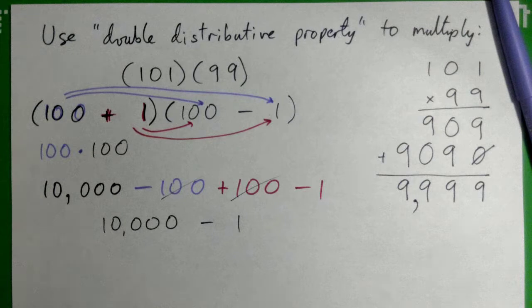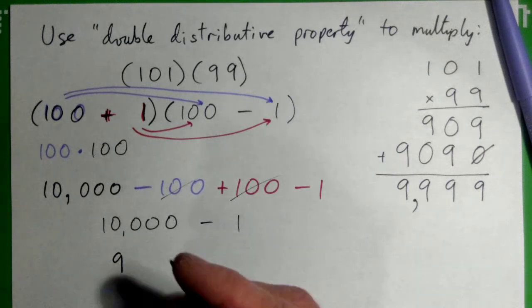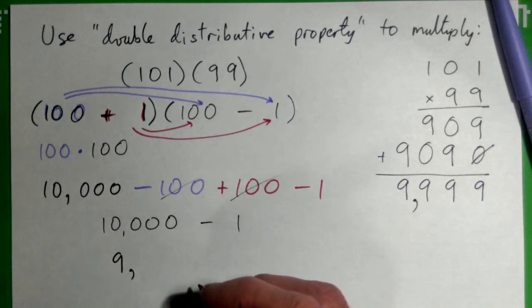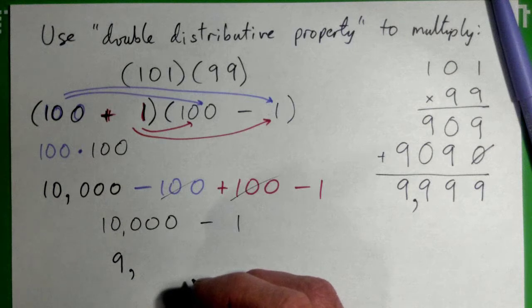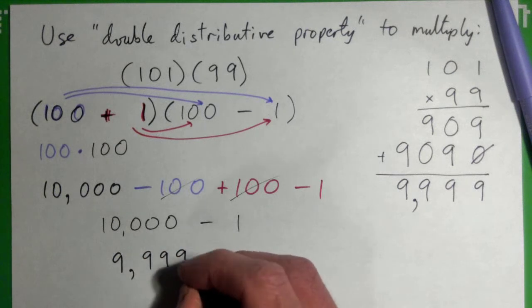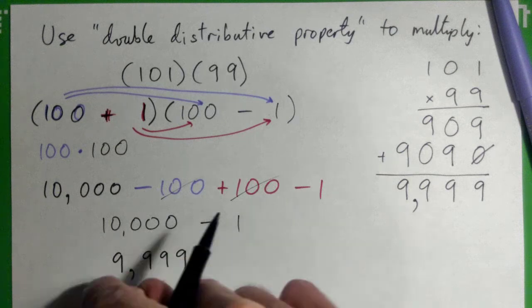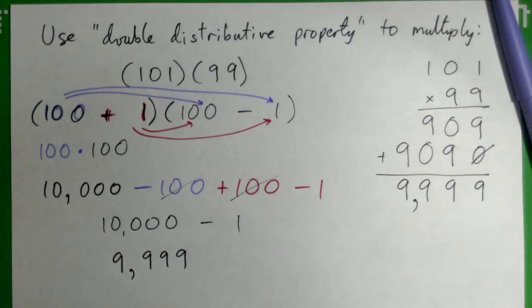It'll be one less. So it'll be nine thousand. Nine thousand. Yeah. There's no zero there. It's just one less than this number. So it's nine thousand nine hundred and ninety-nine, correct? Yeah.